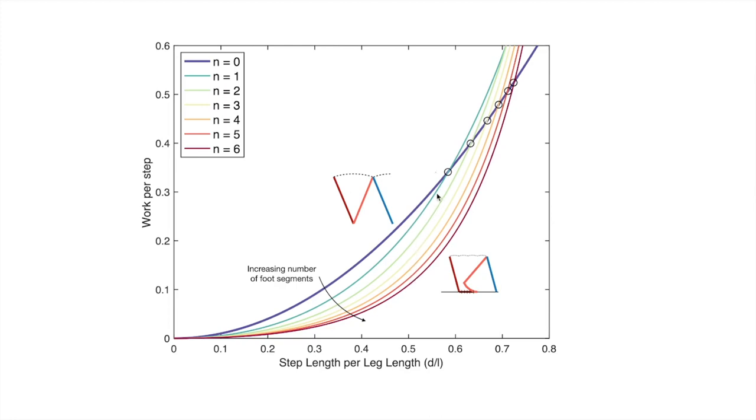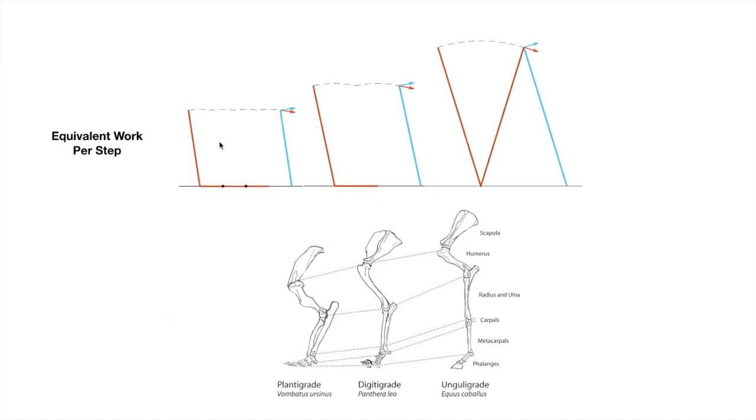Finally, let's look at a slice at constant work per step. What do these configurations look like? Here they are, going from a short leg length with a long foot to a shorter foot and finally no foot.